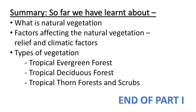So far we have learned about what is natural vegetation, factors affecting natural vegetation such as relief and climate, and different types of vegetation including tropical evergreen forest, tropical deciduous forest, and tropical thorn forest and scrubs. The rest of the chapter will be covered in part two. Till then, goodbye children!